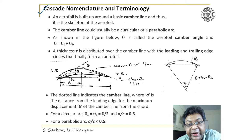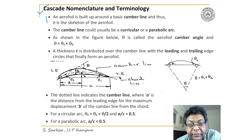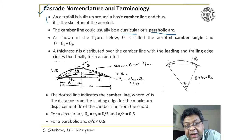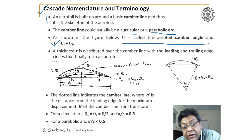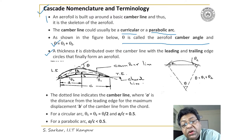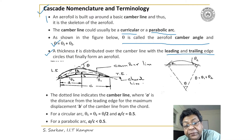I'll go slow here to make you understand. An aerofoil is built around a basic camber line, which is the skeleton of the aerofoil. The camber line could be a circular arc or a parabolic arc. Theta is called the camber angle, which is equal to theta 1 plus theta 2. A thickness T is distributed over the camber line along with the leading edge and trailing edge circles, which finally forms an aerofoil.